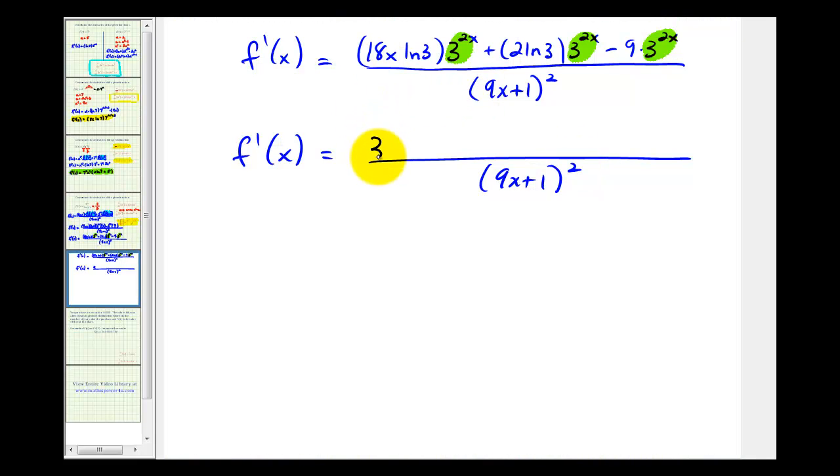So if we factor out the exponential, we'll be left with 18x natural log 3, plus 2 natural log 3, minus 9.